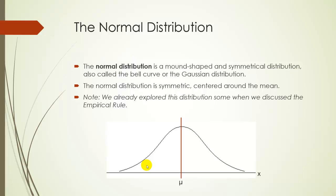This brings us to the normal distribution. We've seen this before — it's the mound-shaped and symmetrical distribution from earlier in the course. We saw it when we discussed the empirical rule. The normal distribution is symmetric, centered around the mean, with one standard deviation, two standard deviations, etc. marked out from center.